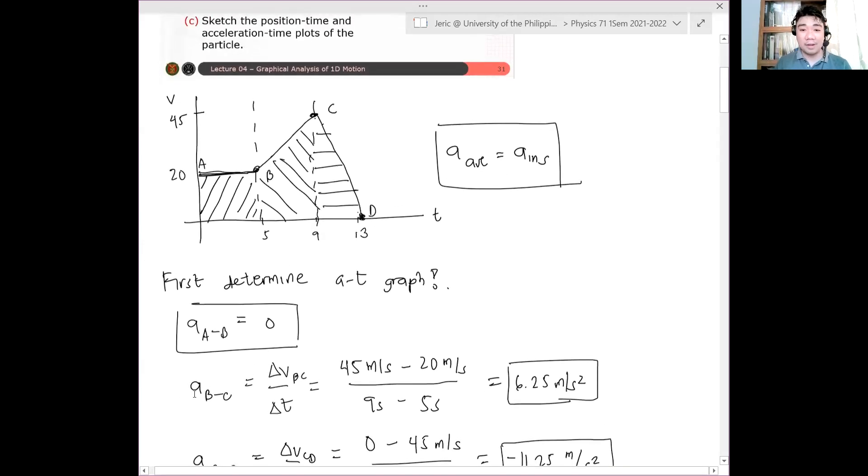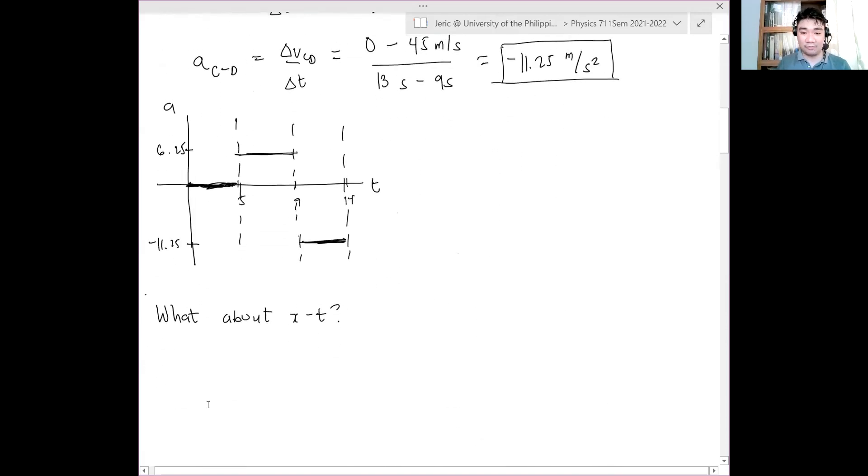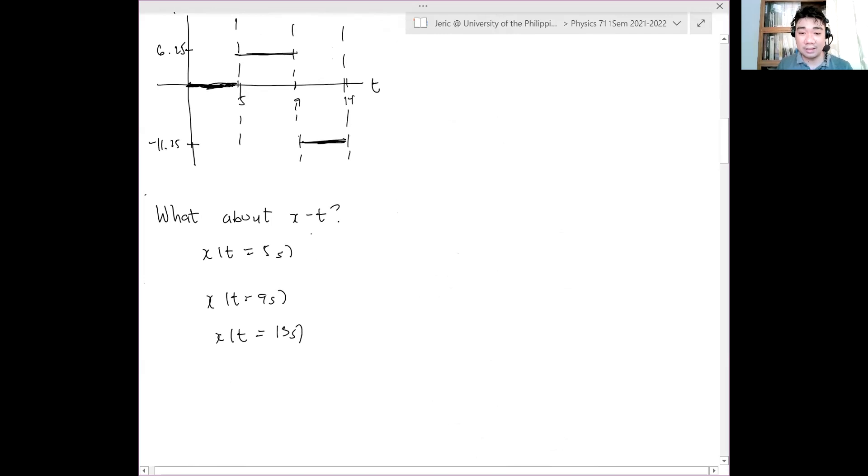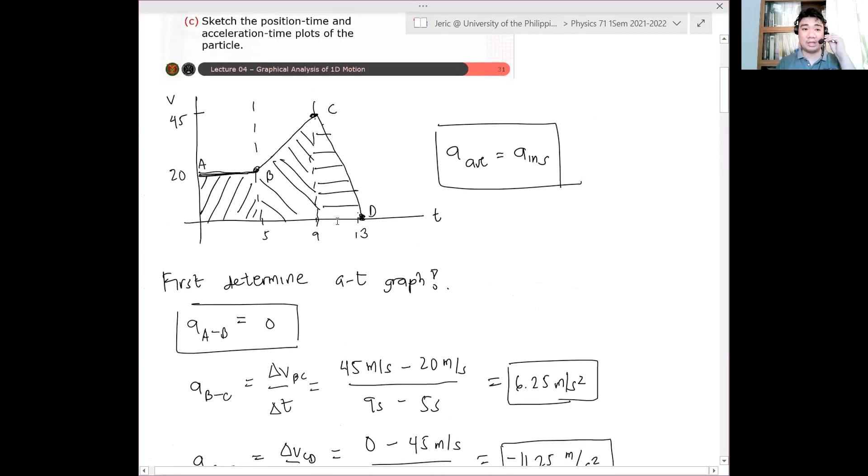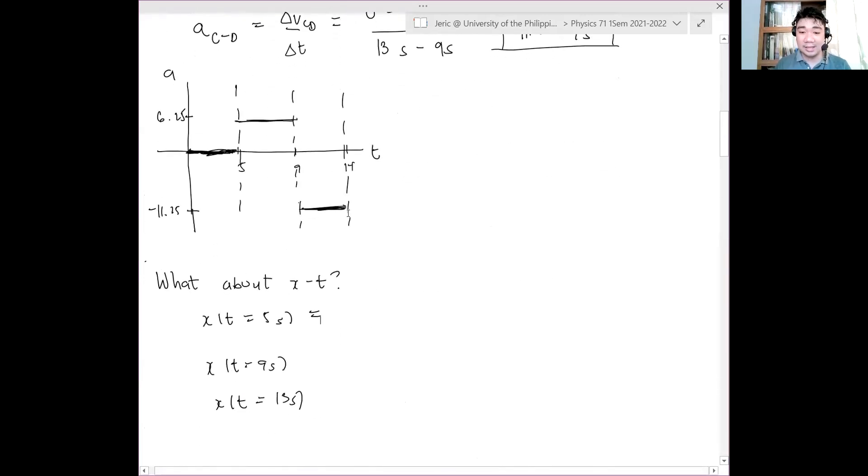We have three regions we're interested in. First, x at t equals 5 seconds. How do you calculate it? This is just a square, so we have 20 times 5, which is 100 meters. We are assuming that the particle is initially at the origin. So this is 100 meters.